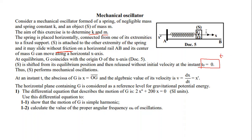Here I can write the initial condition: at T₀ equals 0, X is equal to XM, since S is shifted from its equilibrium position and performs mechanical oscillations. The horizontal plane containing G is considered as a reference, meaning there is no height, so PEG is equal to 0.